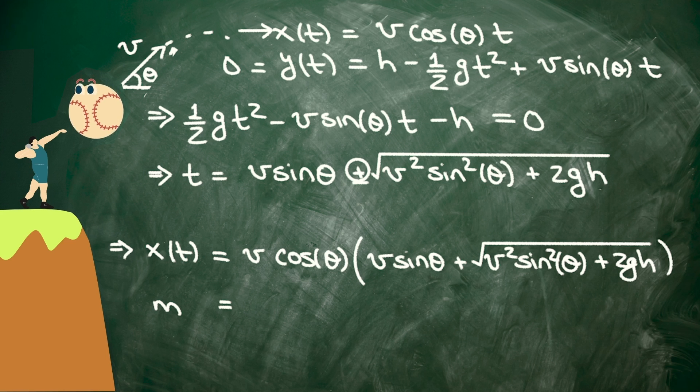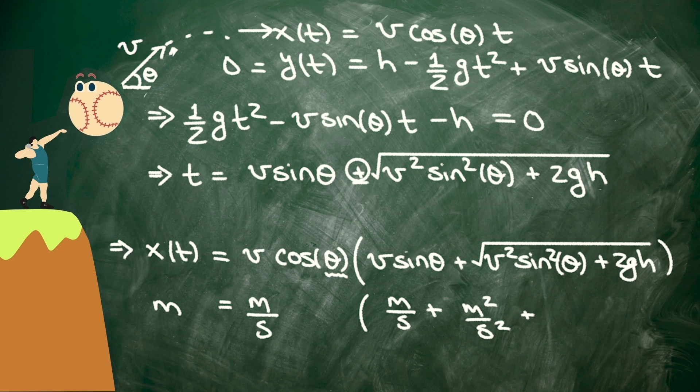Well, we've got v here. That's measured in meters per second, because it's the speed. Theta is dimensionless, it doesn't have any units. Then, inside the parentheses, we've got v again, that's meters per second, plus this thing inside the square root. We've got meters squared per second squared from that v squared, plus 2gh.